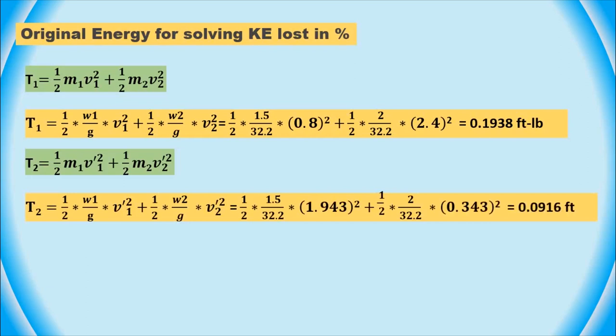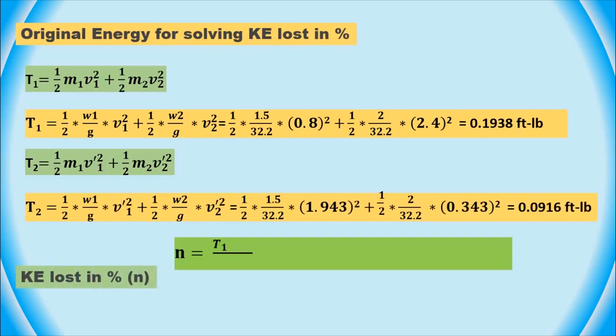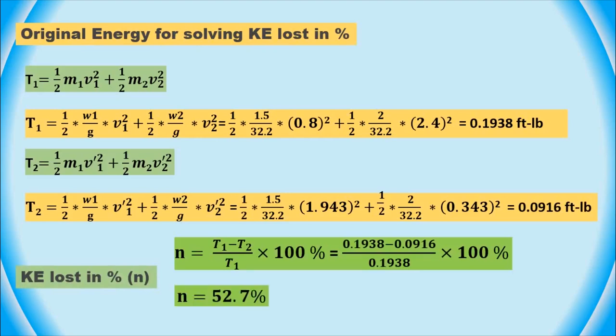Once we have the final velocities, we can use them to calculate the total energy before the collision T1 and after the collision T2, using the equation T equals 0.5 mv squared. Finally, we can calculate the percent of the original energy lost during the impact using the equation: N equals (T1 minus T2) divided by T1 times 100%. The percentage of energy lost during the collision is 52.7%.